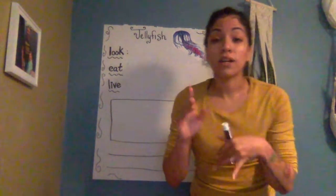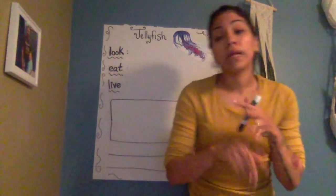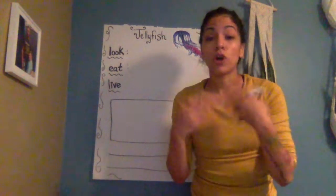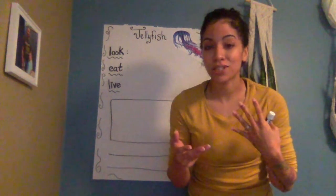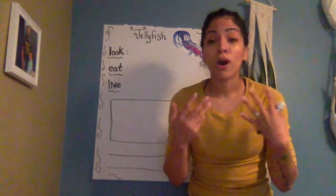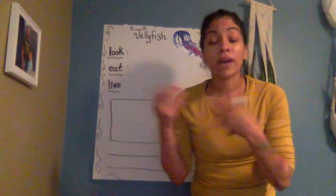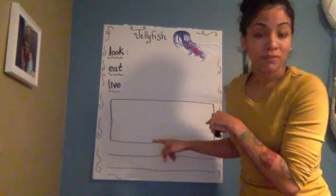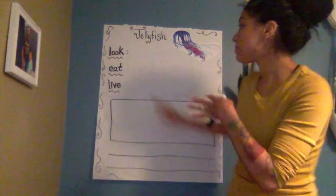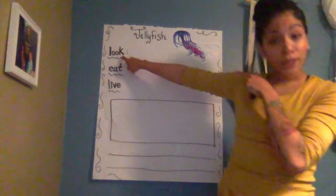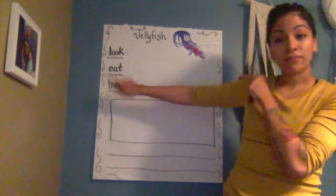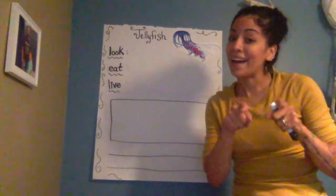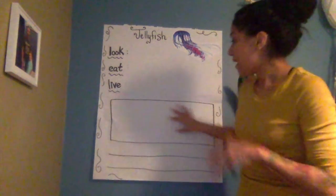Our goal for reading was to think about what a jellyfish looks like, what it eats, and where it lives — and be able to describe it and talk about the things we learned. Now our goal for writing is to write what we have learned in our reading and write all about jellyfish with that information. I have some key words here: look, eat, live — and that's going to help us organize our writing.